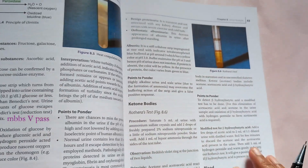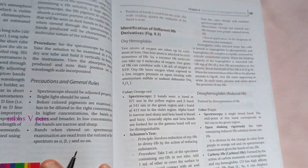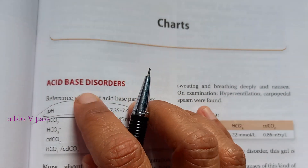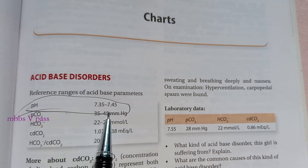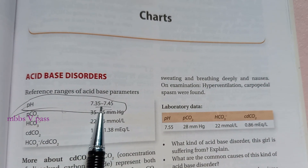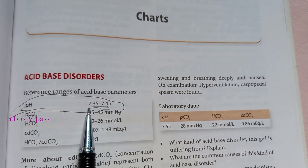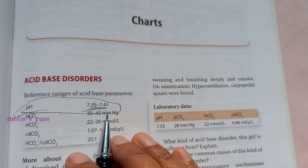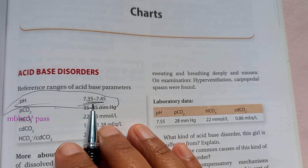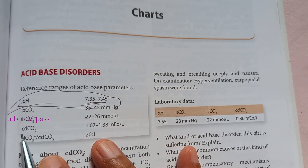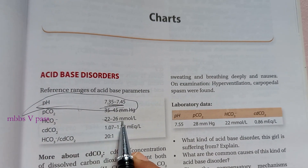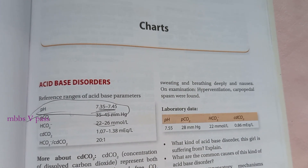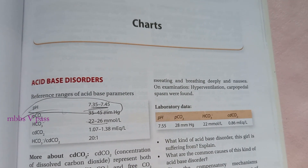What is the normal blood pH? 7.35 to 7.45 — very important. In blood gas analysis you will have to know this, and the bicarbonate levels. This will tell you whether the person is having alkalosis or acidosis, etc.